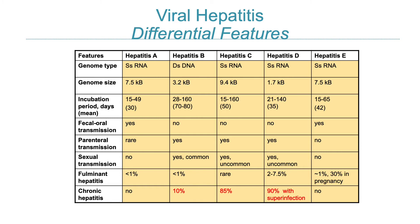Two key differences between HAV and HEV: only HAV has an available immunization option. Additionally, HEV infection in pregnant women can be very serious, potentially leading to acute liver failure, also known as fulminant hepatitis.